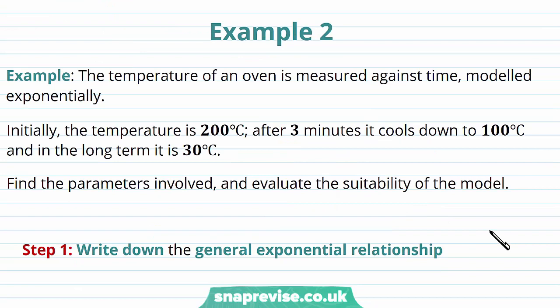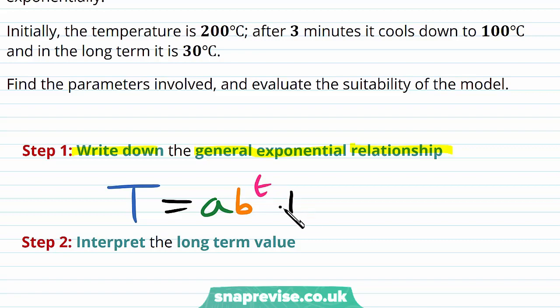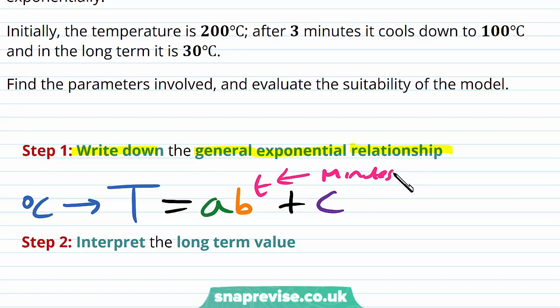Our second example tells us that the temperature of an oven is measured against time, modelled exponentially. Initially the temperature is 200 degrees Celsius. After 3 minutes it cools down to 100 degrees Celsius, and in the long term it is 30 degrees Celsius. We are asked to find the parameters involved and to evaluate the suitability of the model. The first step is to write down the general exponential relationship: capital T equals a multiplied by b to the power of little t, plus c, where T is temperature in degrees Celsius and t is time in minutes.